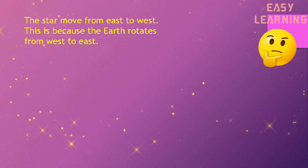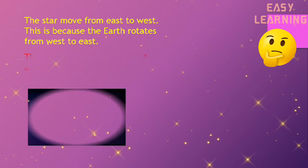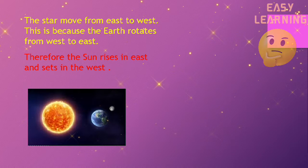The stars move from east to west. This is because the Earth rotates from west to east. Therefore, the Sun rises in the east and sets in the west.